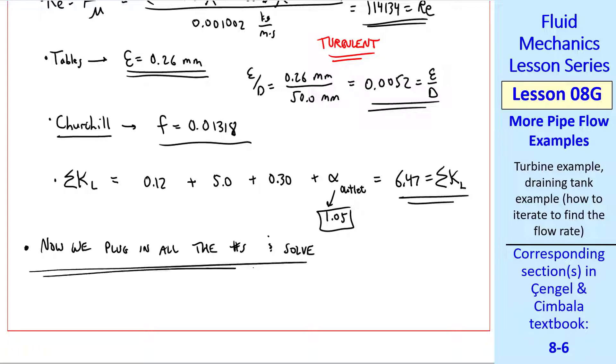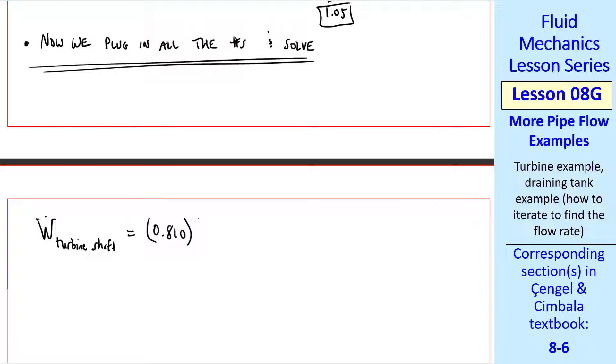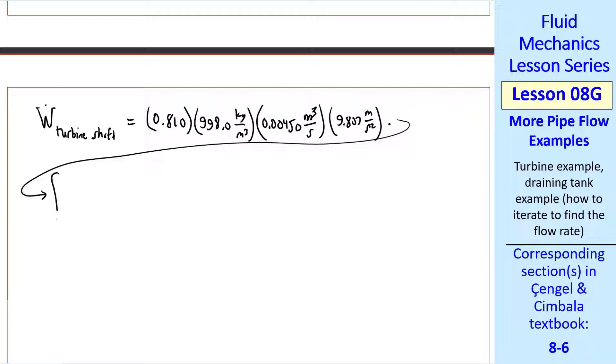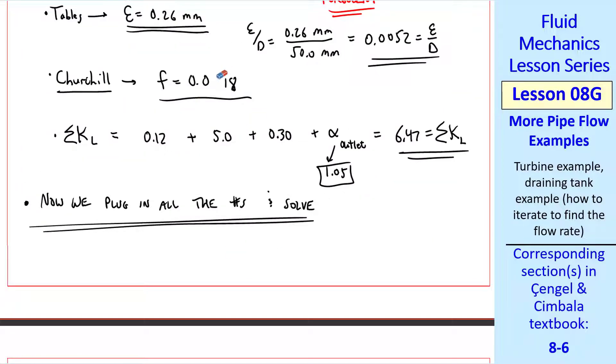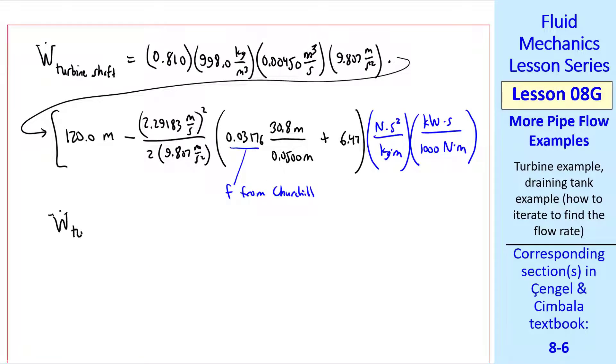Now we have everything we need to plug into our equation and solve. W dot shaft is turbine efficiency, density, volume flow rate, G, and continuing on the next line, we have the quantity H gross, V squared over 2G, F, L over D, plus sigma KL, and two unity conversion factors. This is the F from the Churchill equation, which I realized I wrote wrong previously, so I corrected that. When I plug everything in to my calculator, I get 4.03 kilowatts, which I also verified using software.